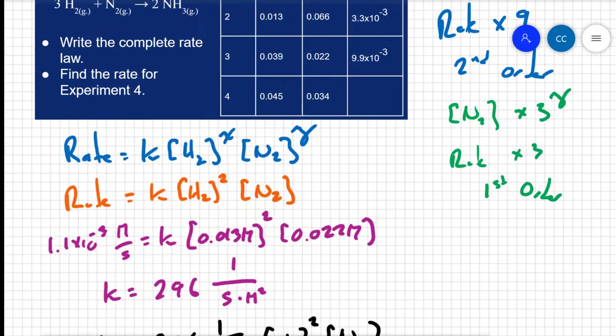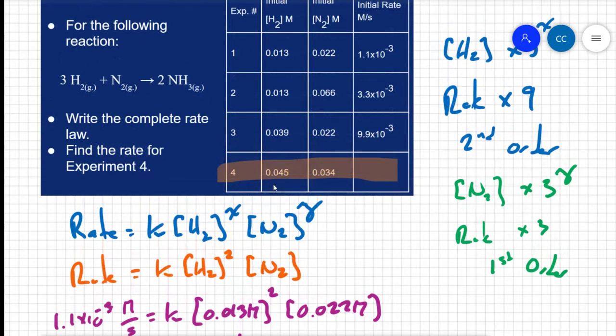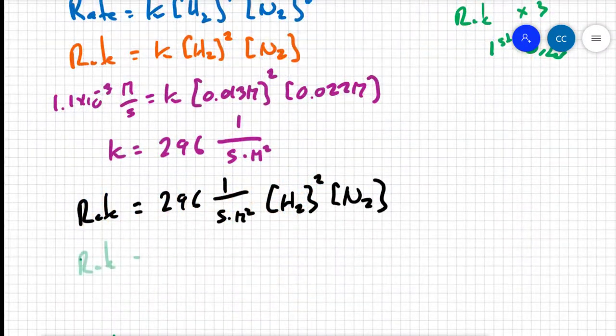So I can plug in my values for reaction 4. My concentration of hydrogen is .045, my concentration of nitrogen is .034. So I can say my rate equals 296, 1 over seconds times molarity squared times my concentration of hydrogen which is .045 molar squared times my concentration of nitrogen which was .034 molar.